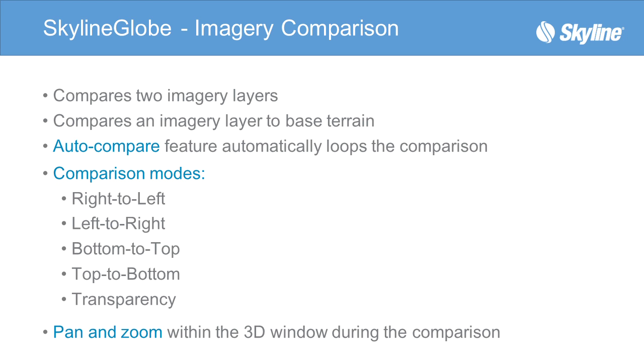Imagery Comparison compares two imagery layers in the 3D window. This helps you detect changes between two imagery layers or an imagery layer and its base terrain.